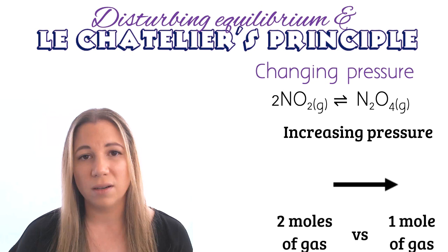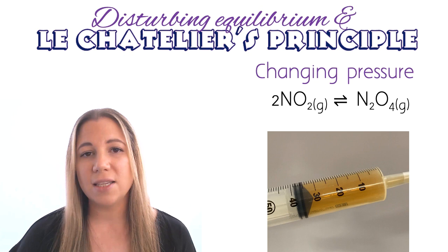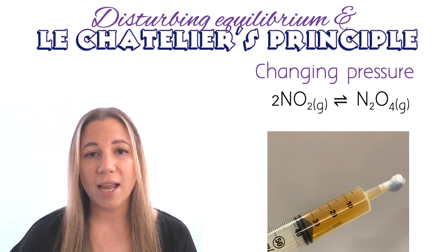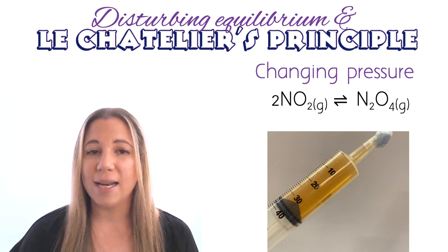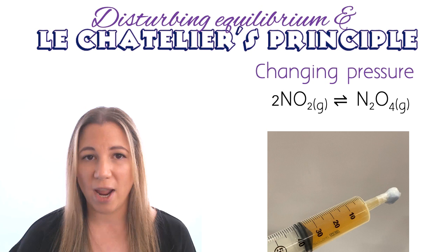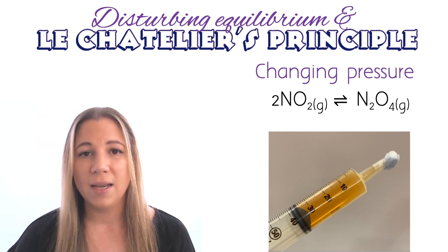Let's watch this happen in real life. In this syringe, I have the system where we have nitrogen dioxide and dinitrogen tetroxide in a dynamic equilibrium — the forward and reverse reactions happening at the same rate. You can see there are no changes in the macroscopic properties of this system, and the colour is remaining constant.